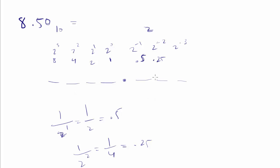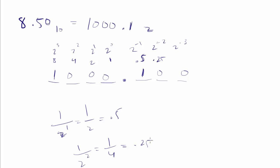So then it's just a matter of saying what is on. For the 8, the 8's position is going to be on. The others are going to be off. And then on the decimal side, I've got a .5, so that position is on and the others are off. So 8.5 in base 10 is 1000.1 in base 2.